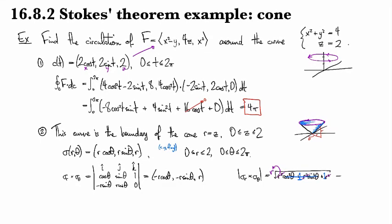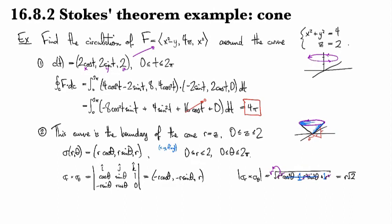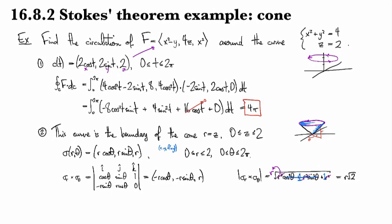And you can see that we can bring those R squareds out as an R. And then I'm going to have cosine squared plus sine squared, which is going to be a one. So I end up with R√2. That's pretty slick.